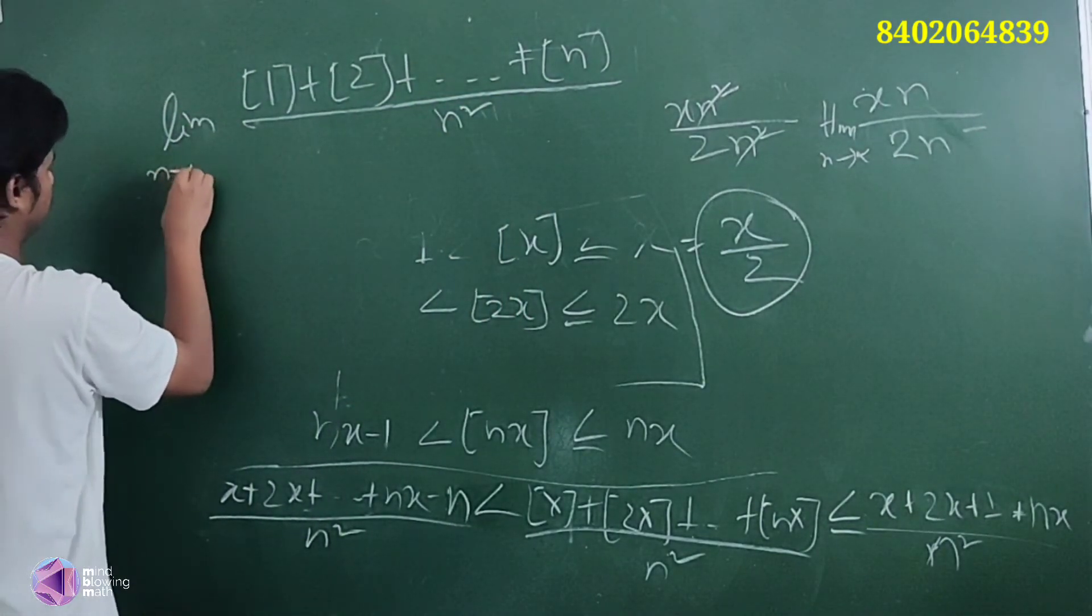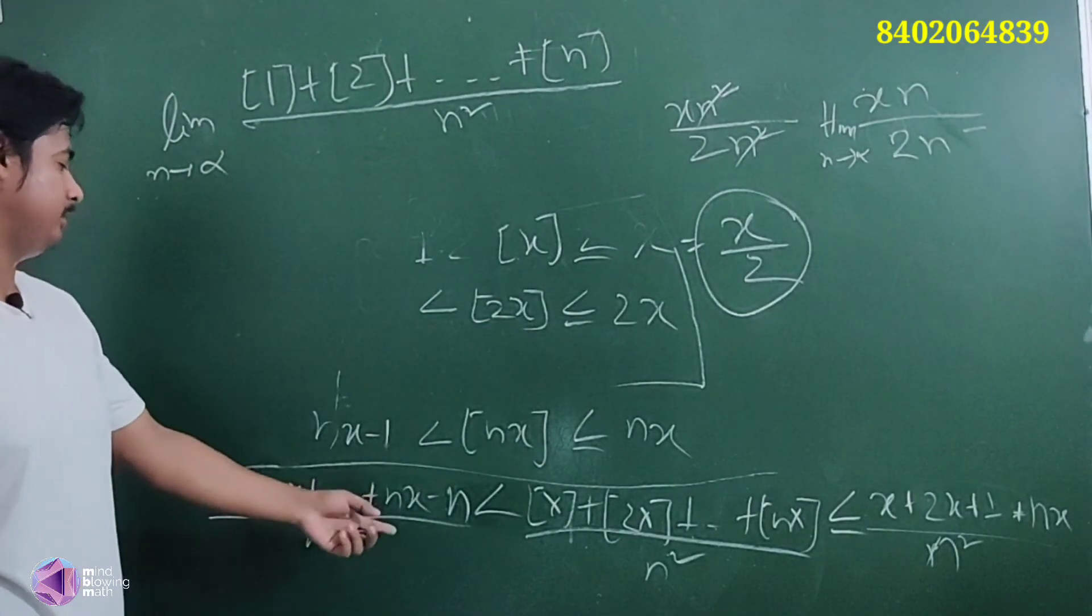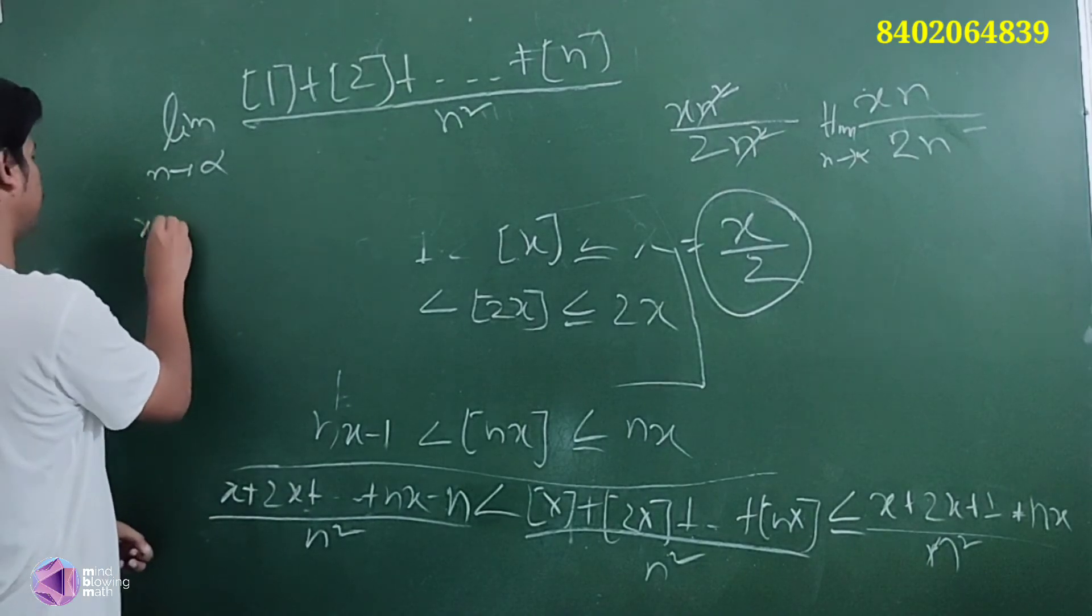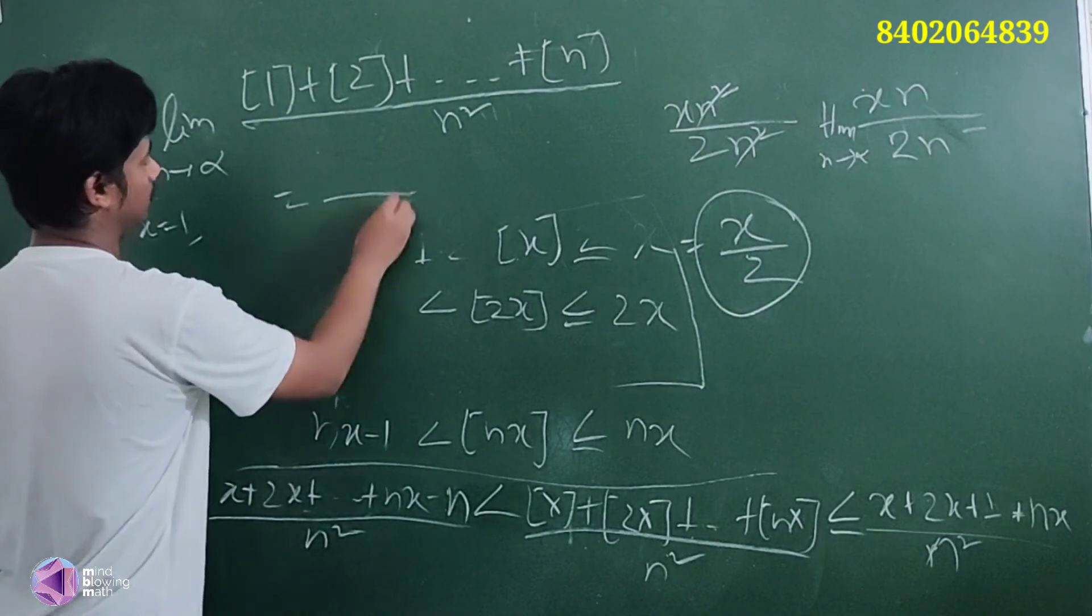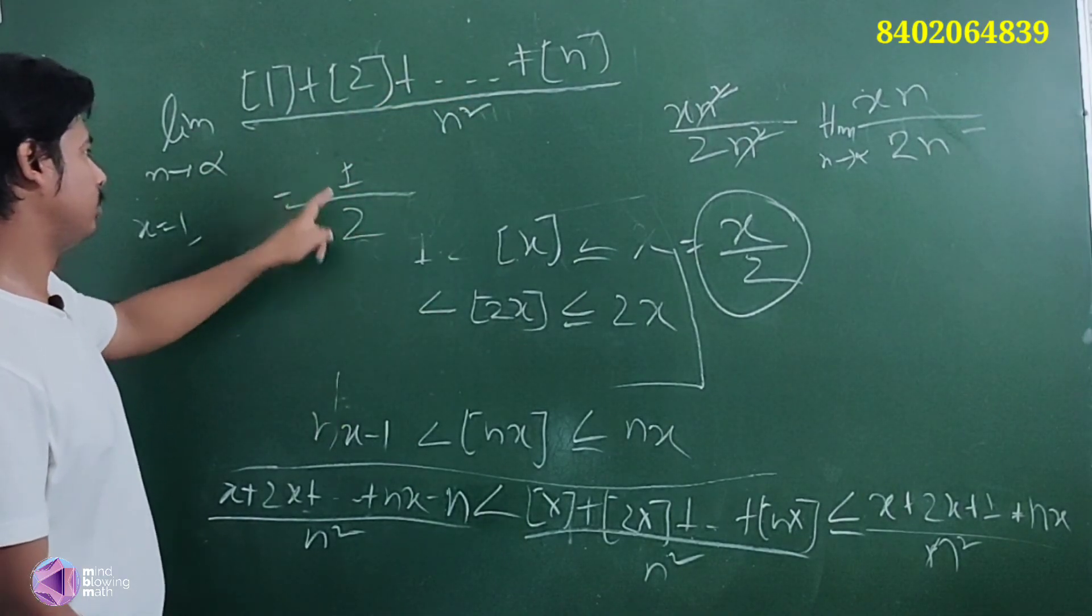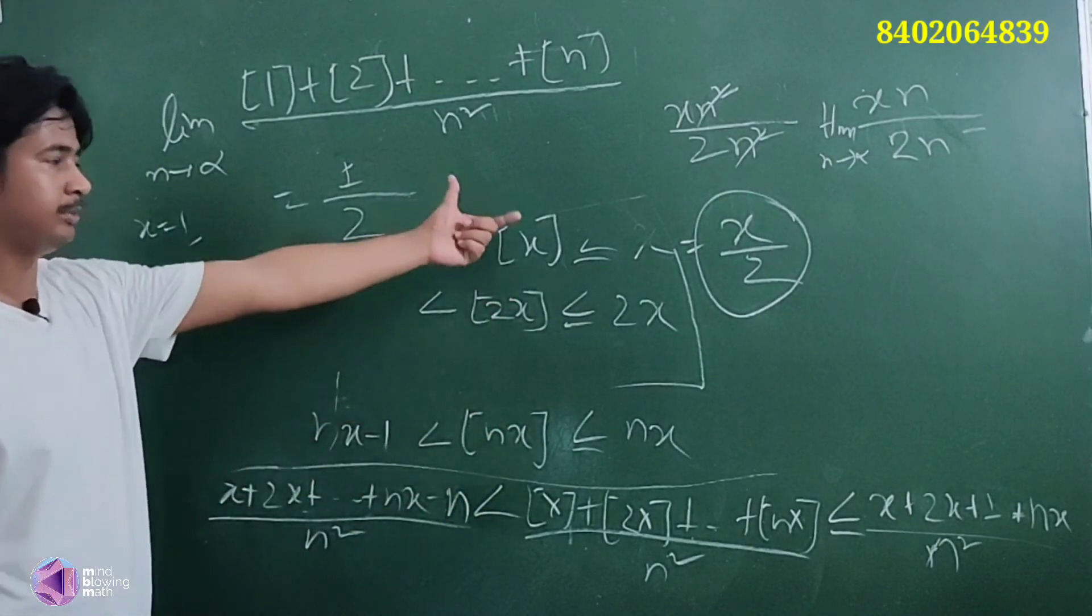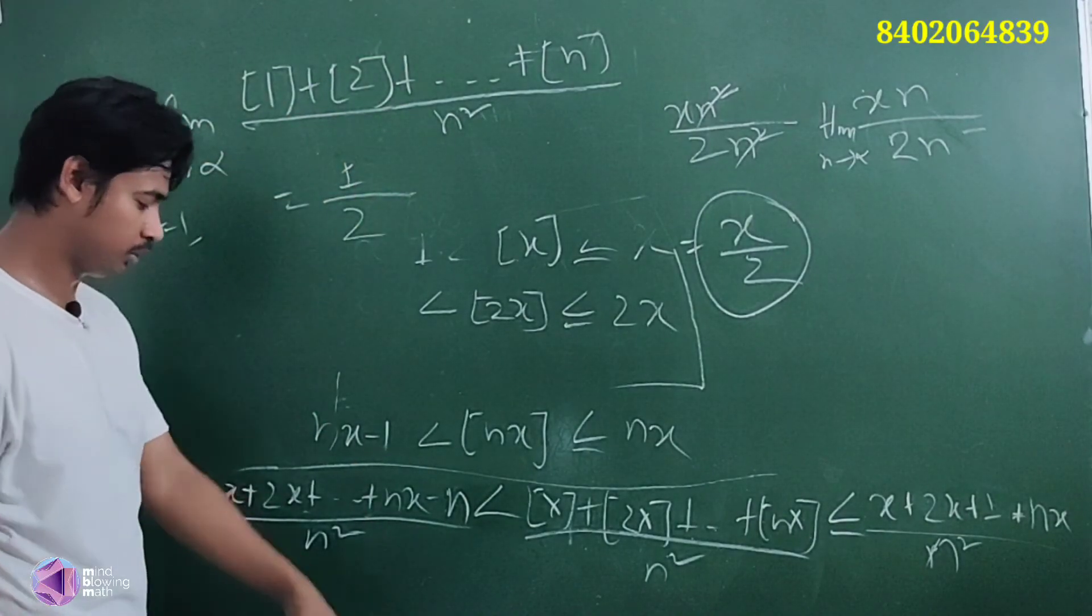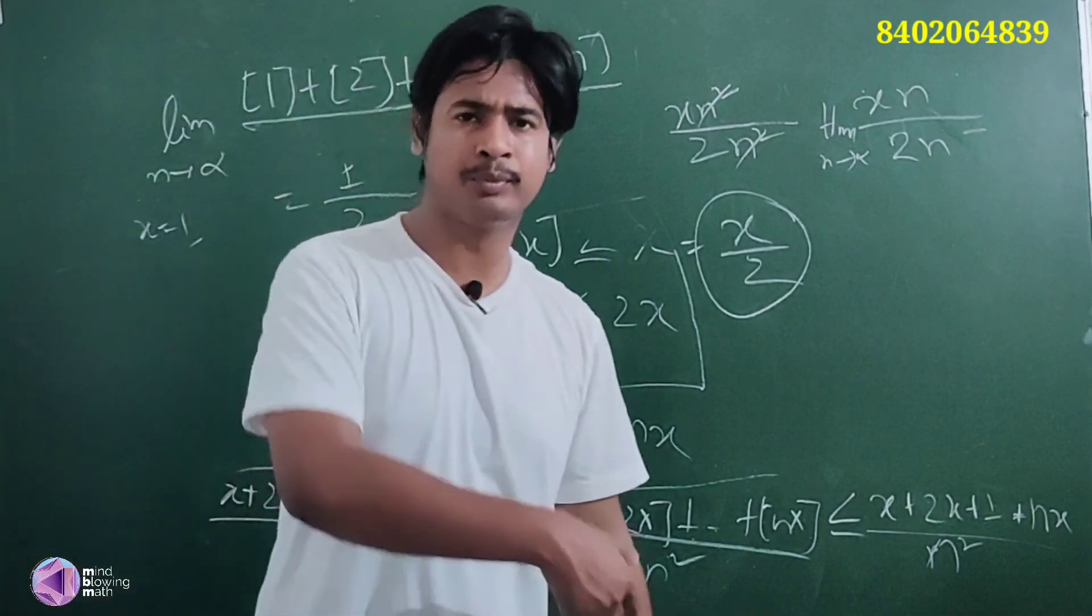For example, if x equals 1, then the answer is 1/2. If x equals 2, then the answer is one. So this sort actually gives x/2.